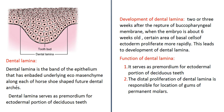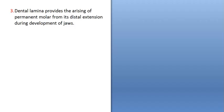Functions of dental lamina: Number one, it serves as the primordial for the ectodermal portion. Number two, the distal proliferation of dental lamina is responsible for the location of the germs of permanent molars. Number three, dental lamina provides the raising of permanent molars from its distal extension during development of the jaws.